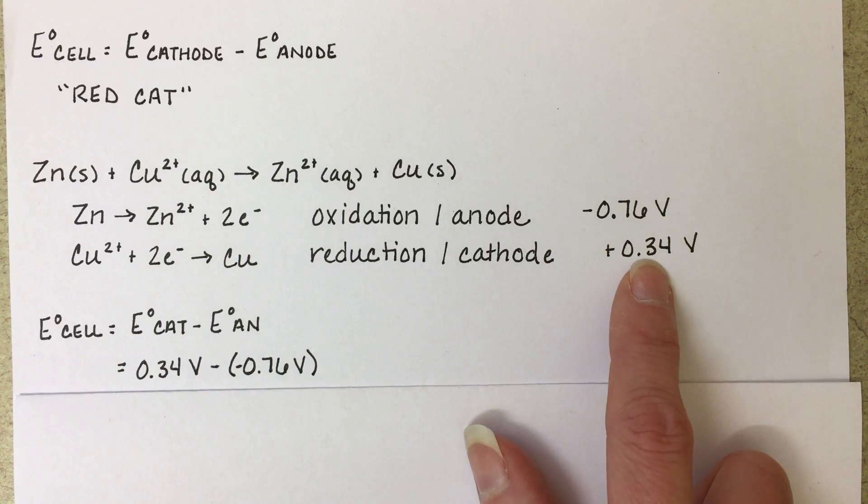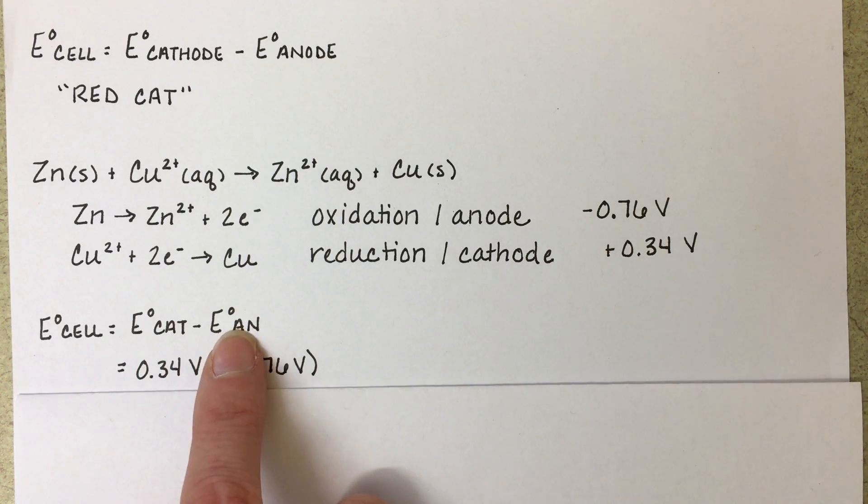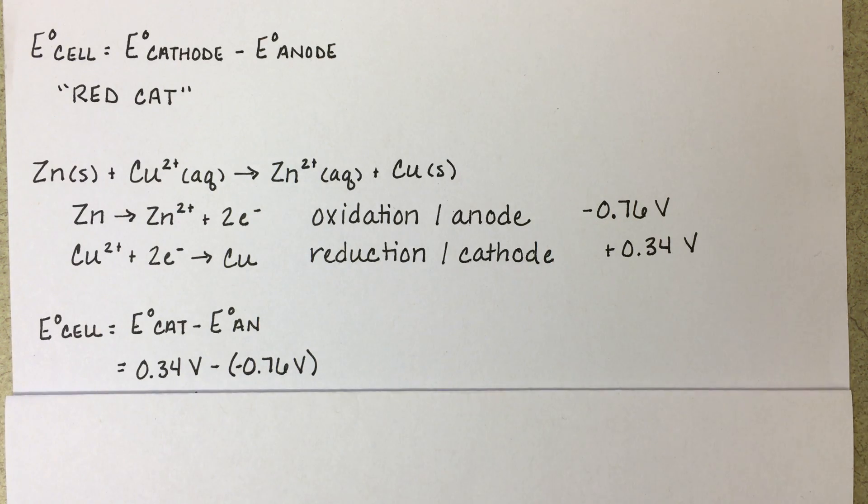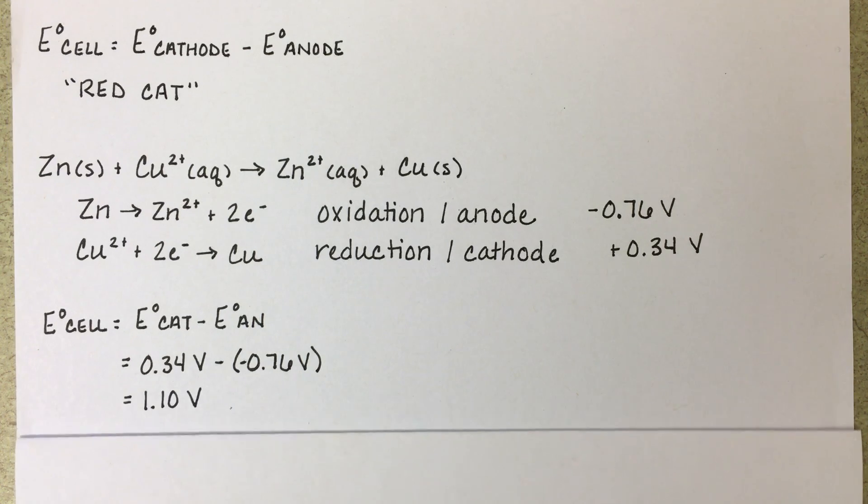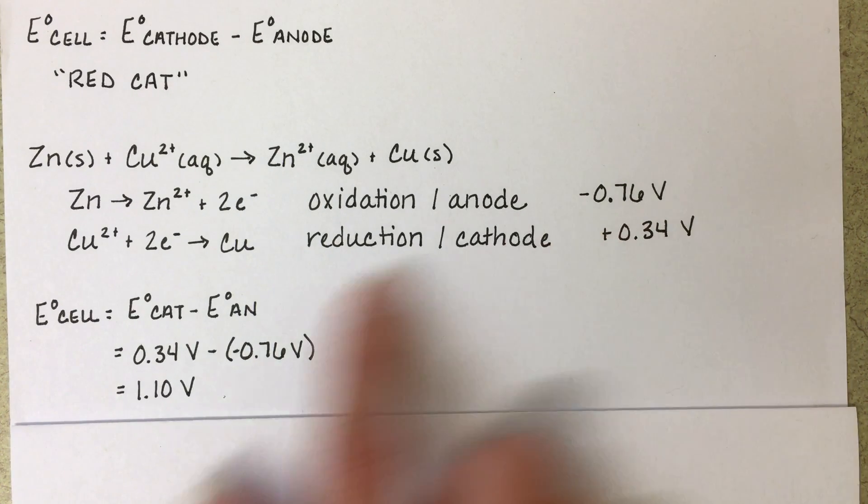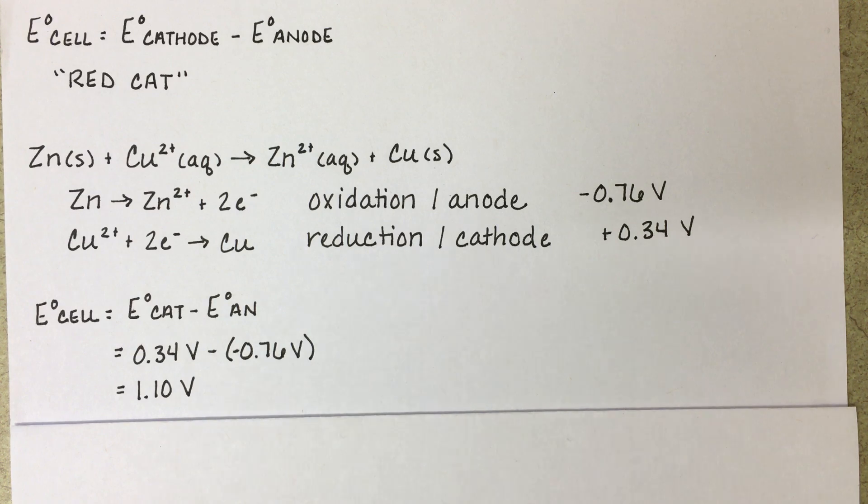Our cathode value is 0.34. Our anode value is negative 0.76. And again, notice that we are not changing the signs of any of these numbers that are coming off of the table. We're just plugging them into the equation, and the equation is changing the sign for us.